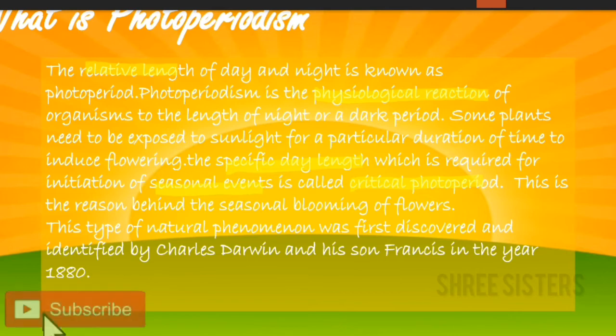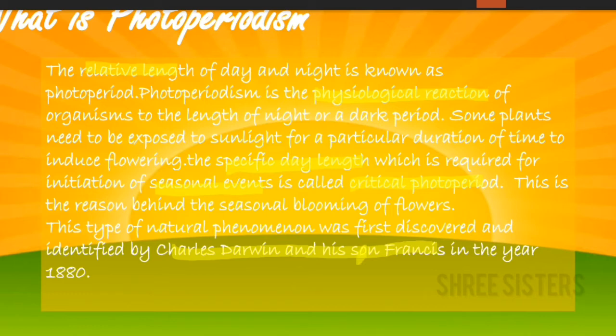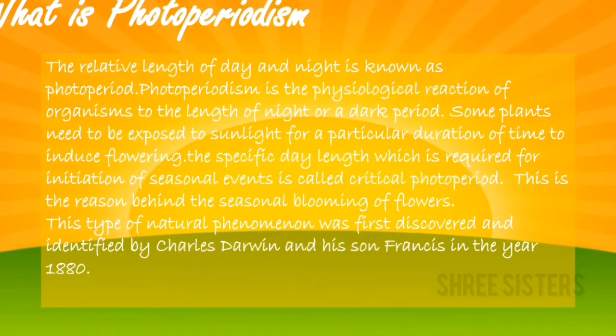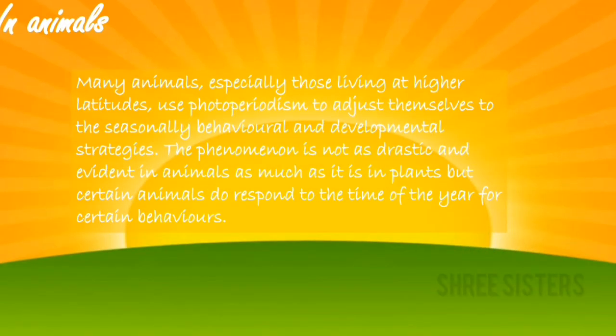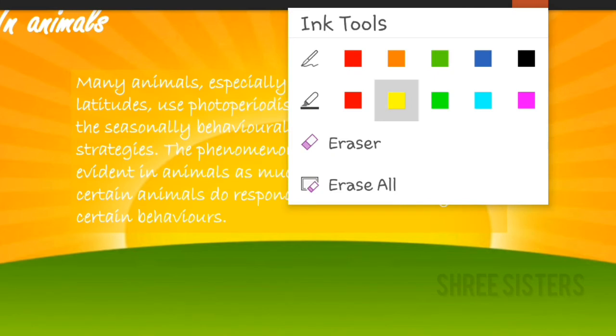Photoperiodism was discovered and identified by Charles Darwin and his son Francis in the year 1880.